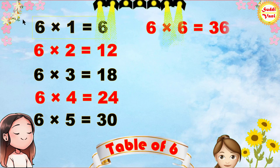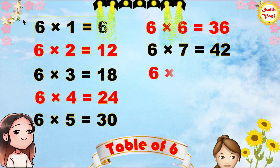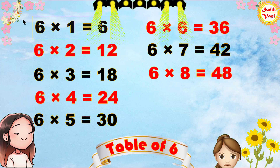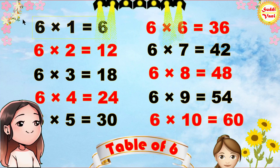6 6s are 36, 6 7s are 42, 6 6s are 48, 6 9s are 54, 6 10s are 60.